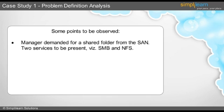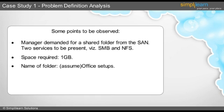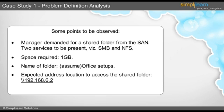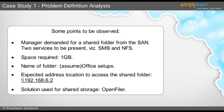The manager demanded a shared folder from the SAN. So two services are to be present, namely SMB and NFS. The space required is 1 GB. The name of the folder will be Office Setups. The expected address location to access the shared folder in the network setup is \192.168.6.2. We will be using OpenFiler for shared storage.